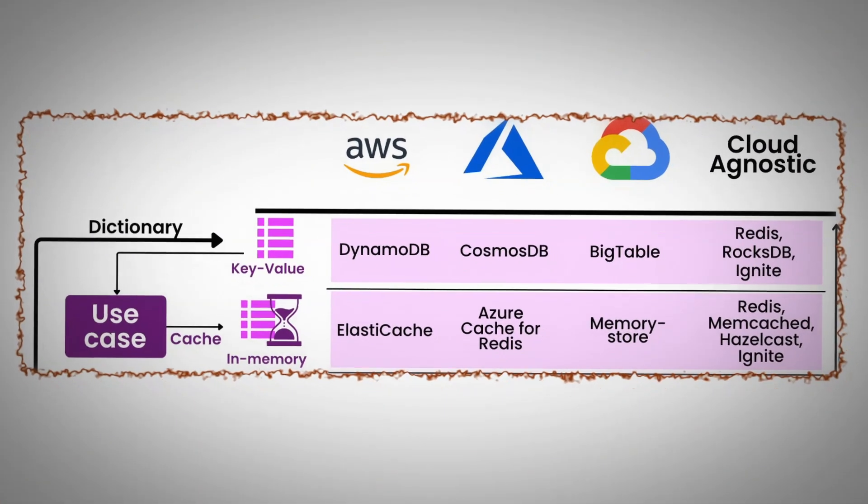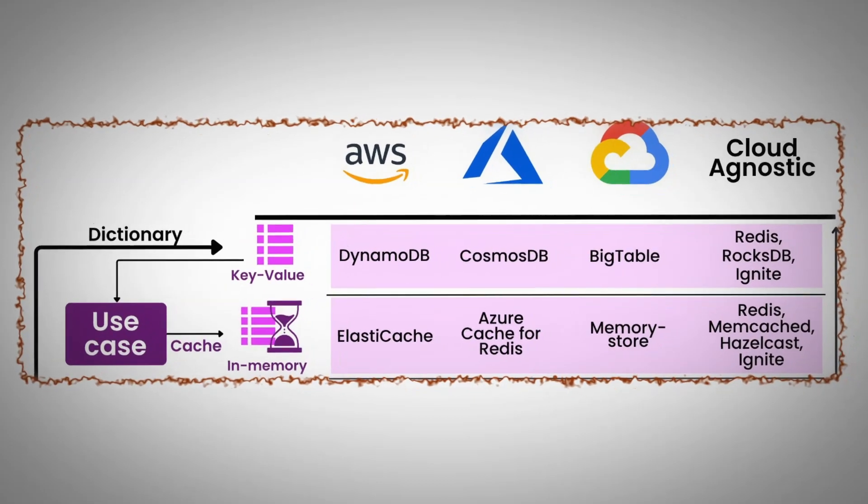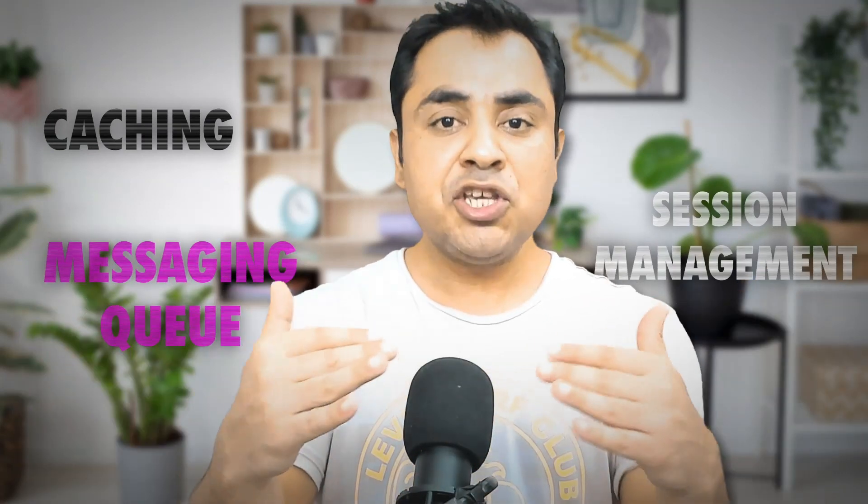The next type is key-value pair databases, where there is a key and a value. These are usually used for read-heavy systems, and there are two sub-choices: in-memory or on-disk storage. For caching with low latency, we use in-memory key-value stores like Redis, Hazelcast, or Memcached. If low latency is not a strict requirement, we may go with DynamoDB. These systems are frequently used for caching, session management, messaging queues, and distributed locking.